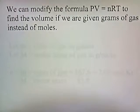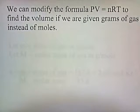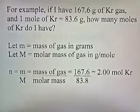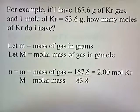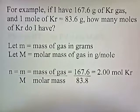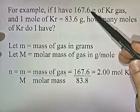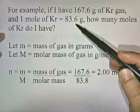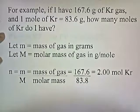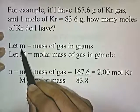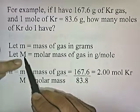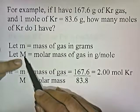We can modify the formula PV equals NRT to find the volume if we're given grams of gas instead of moles. For example, if I have 167.6 grams of krypton gas and one mole of krypton is 83.6 grams, how many moles of krypton do I have? You would just do 167.6 divided by 83.6 to figure out how many moles you got. Let's let little m equal the mass of gas. Let capital M be the molar mass of gas in grams per mole. So capital M is how much one mole of this stuff weighs.